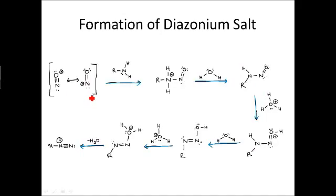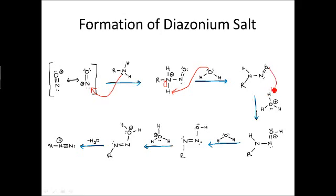The nitrosonium ion produced in the previous step is then attacked by a phenylamine, producing an ammonium ion. This ammonium ion is then deprotonated by a water molecule. Then the structure that is formed is protonated by a hydronium ion, and then deprotonated again by a water molecule. This deprotonation is key because it forms a double bond between the nitrogens.